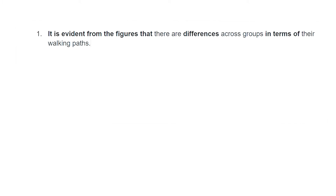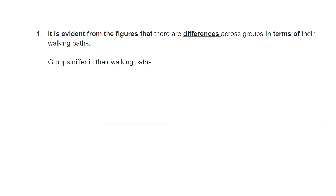For this example, the main problem we are looking at is the word 'differences.' 'Differences' is a noun that can be turned into the verb 'to differ.' So: things differ — what differs? Groups differ. How do they differ? They differ in their walking paths. This is all that is being said in that sentence. We just add the figure numbers here.